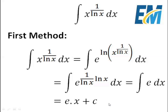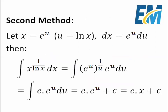Now we will use another method, which is using the change of variable. So let's take x as e to the power u, or u equals ln x. Then dx will be the derivative of this term, which is e to the power u du.